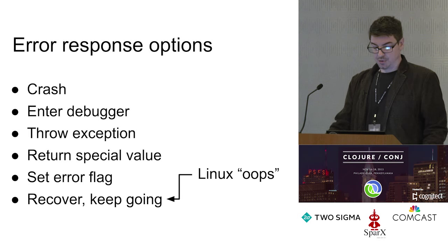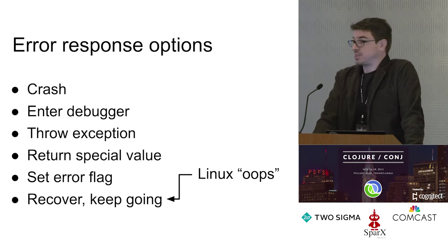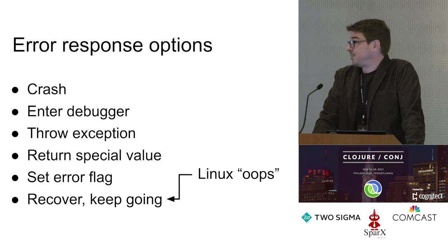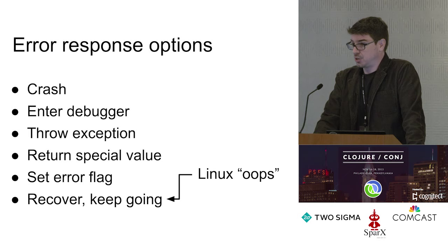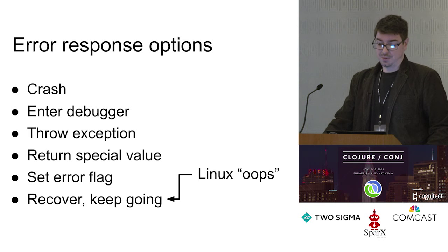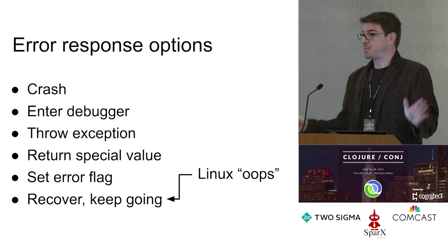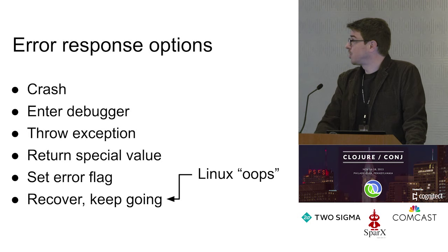And finally, recover and keep going. Another Unix operating system — if you dereference a null pointer inside the Linux kernel, you'll get an 'oops,' which is a little message in a log that you probably never look at. So it's kind of interesting that we have Unix operating systems that have chosen opposite ends of the spectrum. These are all potentially reasonable choices.